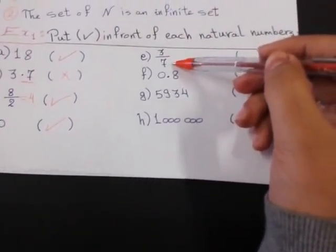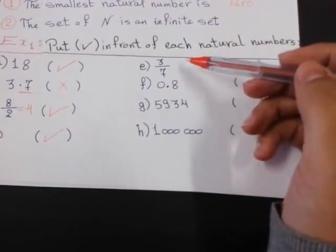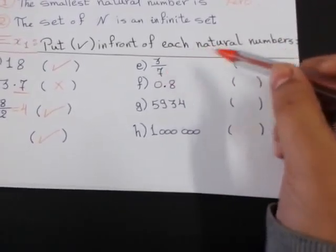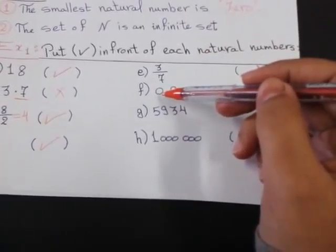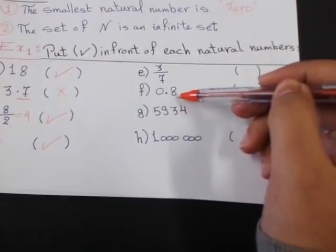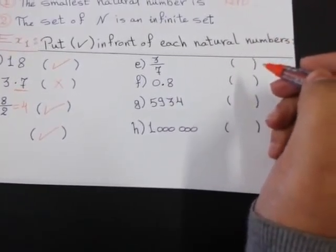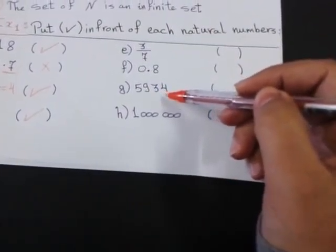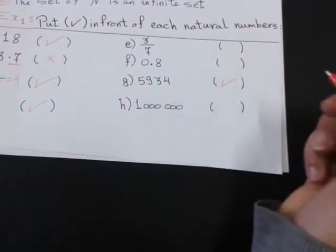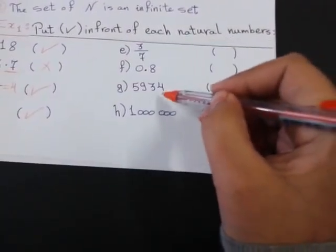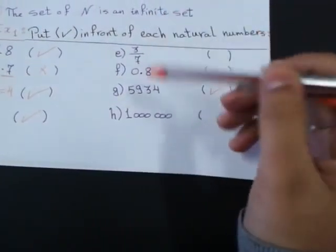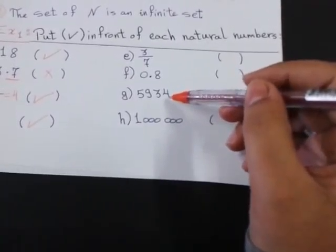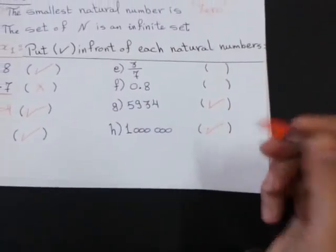3 over 7. 3 divided by 7, it has no answer. So, 3 over 7 is a decimal number or fraction number, so it's not natural. 0.8 or 8 tenths. It's not natural also because it's a decimal. 5,934. This is a natural number. Why it's natural? It's very big. Yes, because the natural number is an infinite set. So, I can't stop counting. 1 million, also natural number.